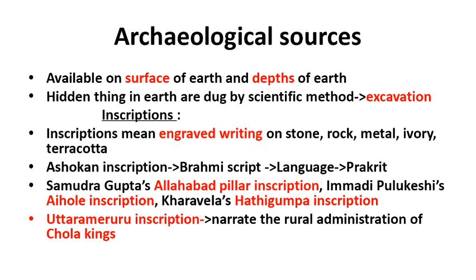Inscriptions means engraved writing on stone, rock, metal, ivory, and terracotta. They have a direct relationship with events that happened in the past. Examples include Ashokan inscriptions written in Brahmi script in the Prakrit language, Samudra Gupta's Allahabad pillar inscription, Imadi Pulakeshi's Aihola inscription, Karavela's Hathigumpha inscription, and Uttarameruru inscriptions, which narrate the rural administration of Chola kings. These inscriptions reflect political, social, cultural, economic, and religious aspects of the past.